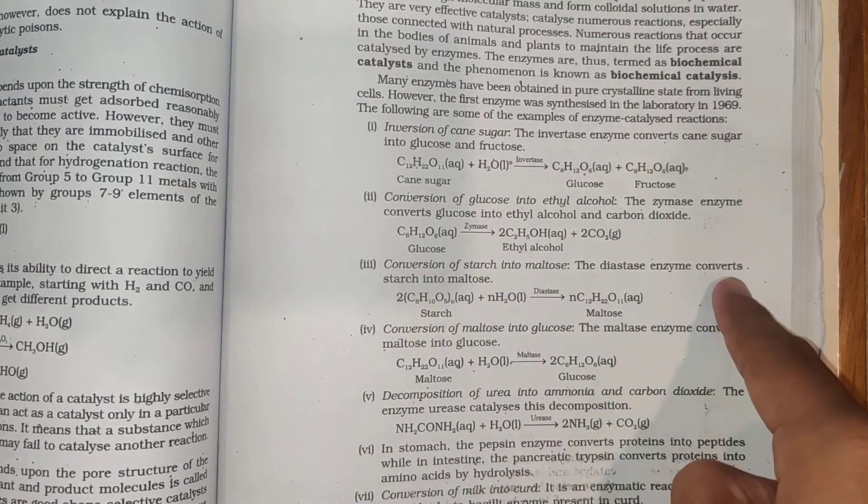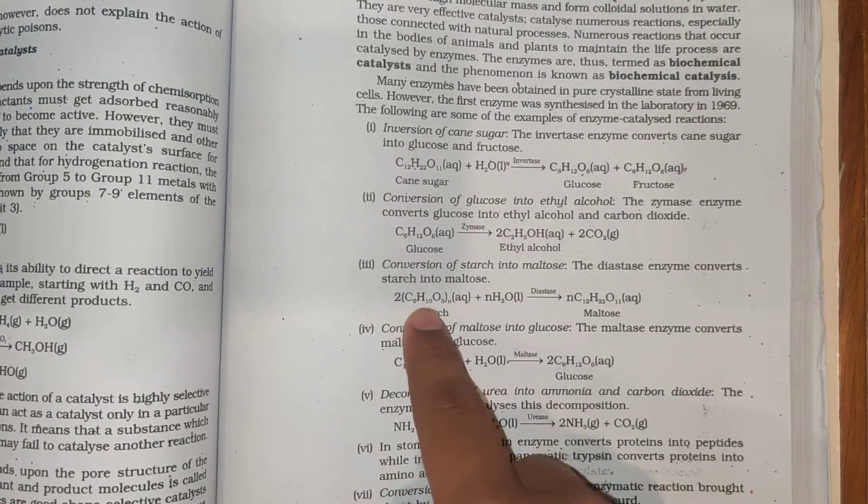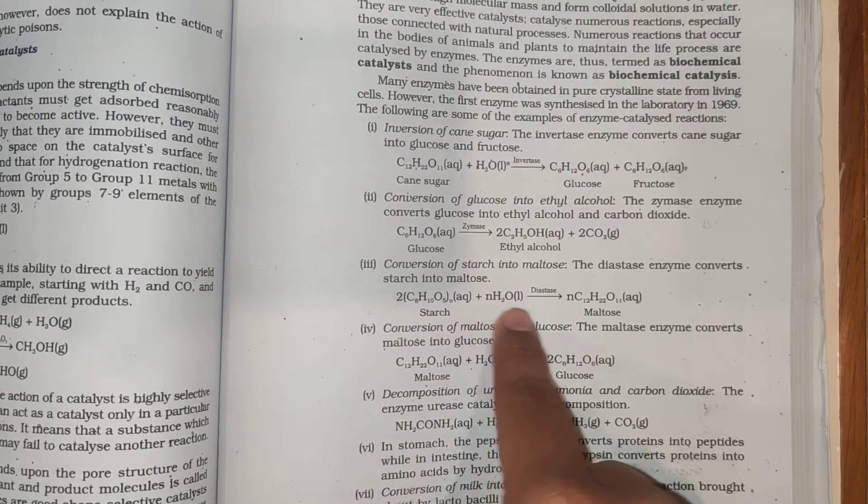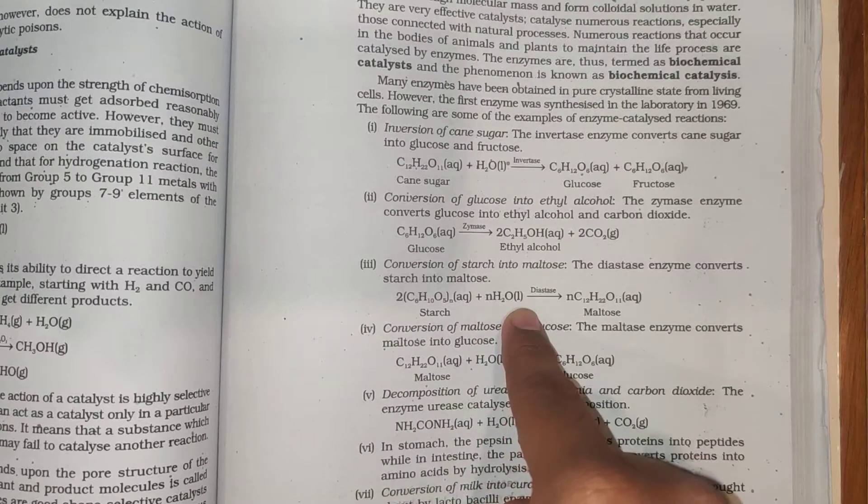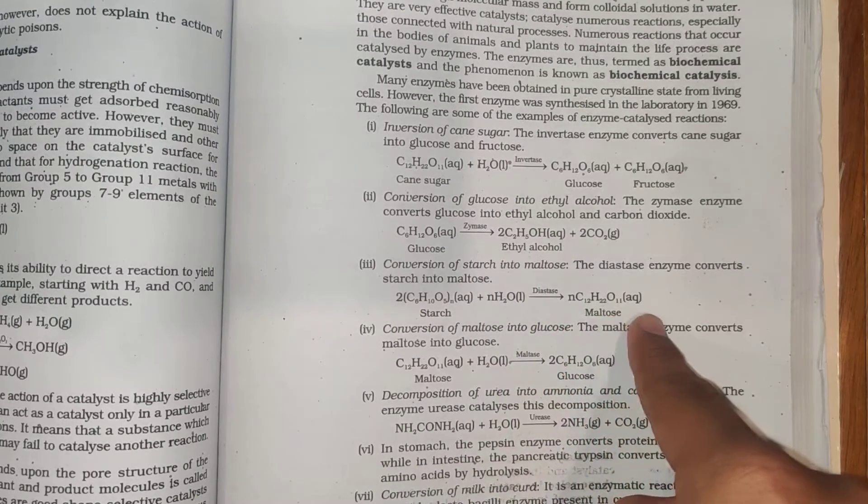Conversion of starch into maltose: The diastase enzyme converts starch into maltose. (C6H10O5)n (aqueous starch) plus n molecules of H2O (liquid) in presence of diastase forms C12H22O11 (aqueous maltose).